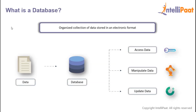So what exactly is a database? Well, simply put, it's just an organized collection of data that are stored in an electronic format. More specifically, a database is an electronic system that allows us to easily access, manipulate, and update the data.